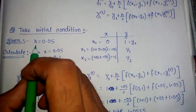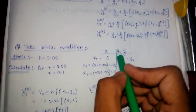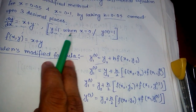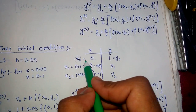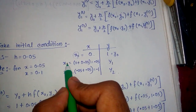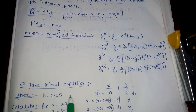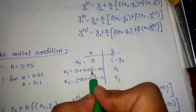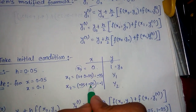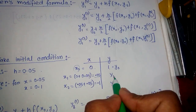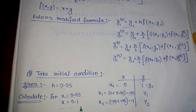Coming to our question, the initial conditions are: when x equals 0, y equals 1. So x naught equals 0 and y naught equals 1. h is given as 0.05. The step increase gives x1 equals 0 plus 0.05 equals 0.05, and x2 equals 0.05 plus 0.05 equals 0.1. Along x1 we name y1, and along x2 we name y2. We need to calculate both y1 and y2.